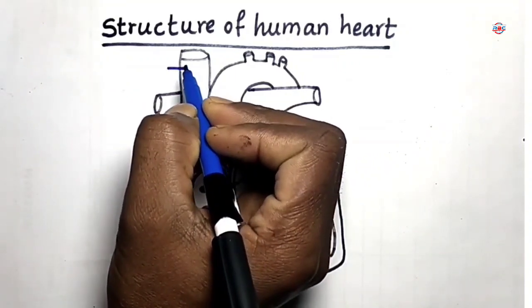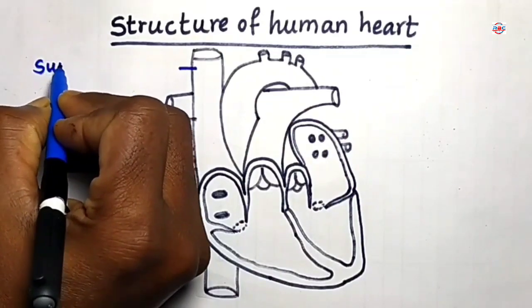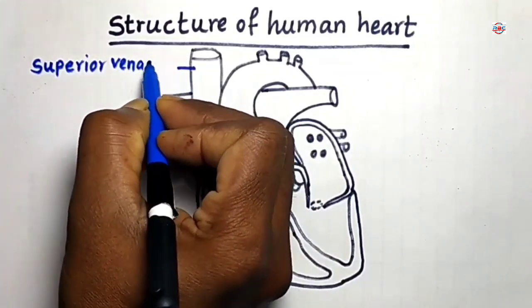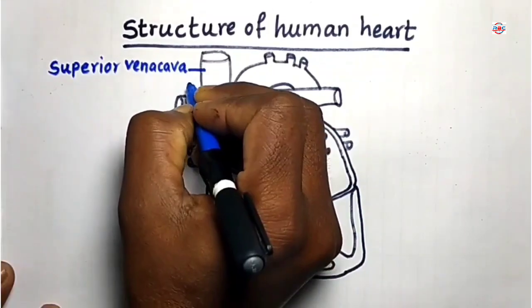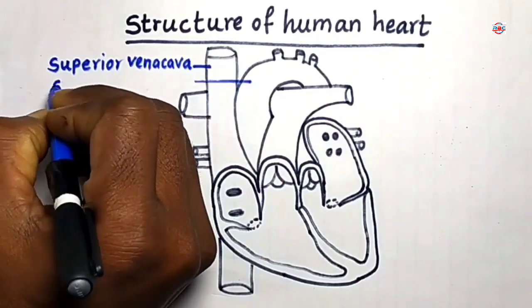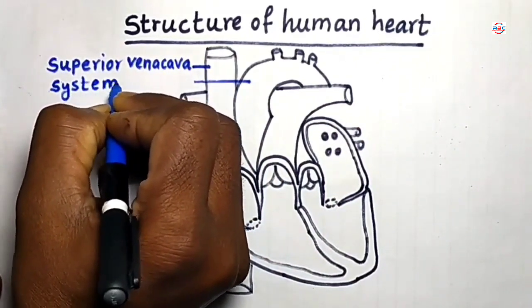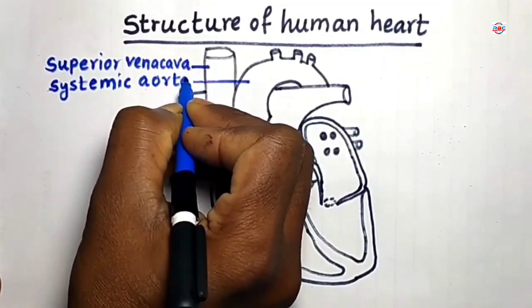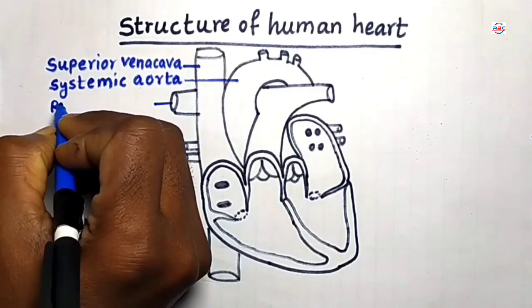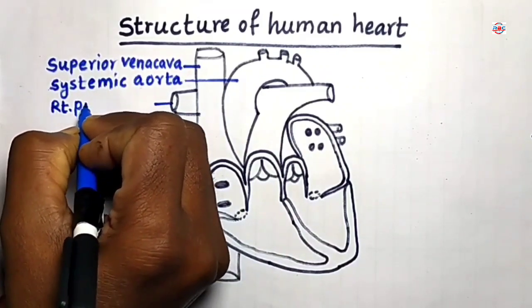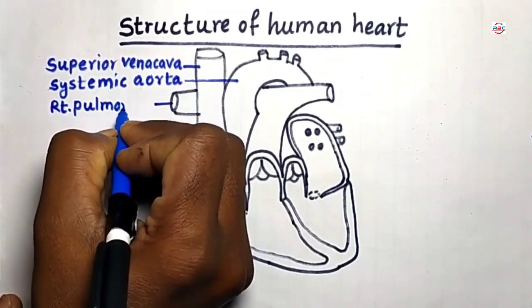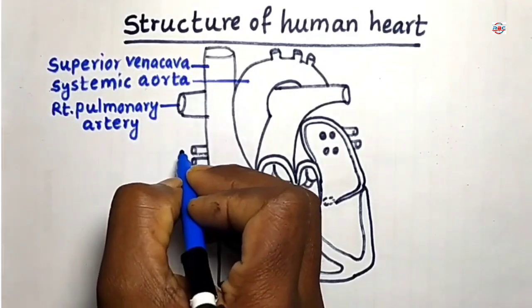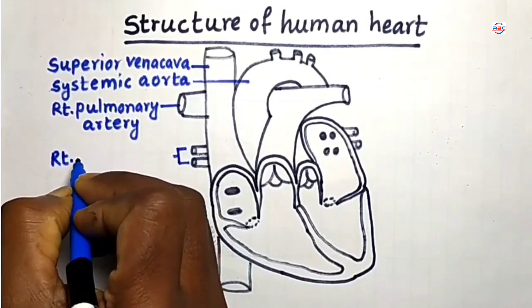This is called Superior Venakabha. This is called Systemic Aorta. This is called Right Pulmonary Artery. These are Right Pulmonary Vents.